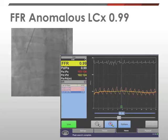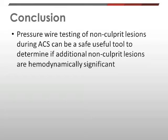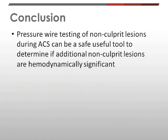In conclusion, this case demonstrates that pressure wire testing of a non-culprit lesion during acute coronary syndrome can be a safe and useful tool to determine if additional non-culprit lesions are hemodynamically significant, which may help guide further management and care of the patient. Thank you.